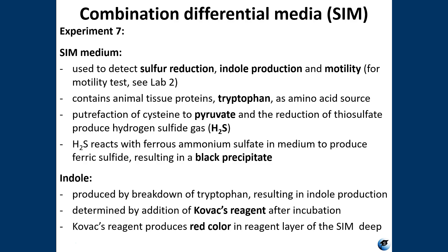Sulfur reduction to hydrogen sulfide is accomplished by bacteria via the enzymes cysteine desulfurase or thiosulfate reductase. Either of those reactions produces hydrogen sulfide. The hydrogen sulfide reacts with ferrous ammonium sulfate in the SIM medium and produces ferric sulfide — a black precipitate visible as black chunks in the SIM tubes — which is a positive result for sulfur reduction. Indole production is made possible by tryptophan in the casein and animal protein in the media. Bacteria possessing the enzyme tryptophanase can hydrolyze tryptophan to pyruvate, ammonia, and indole.